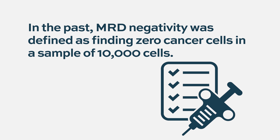It has been arbitrarily defined that less than one in 10,000 cells is what we call MRD negative. A lot of the literature doesn't give a specific number — like 10 or 20 cells per million — but uses positive and negative, meaning you have more or less than one cell in 10,000.